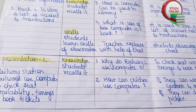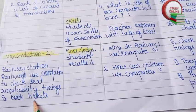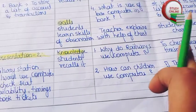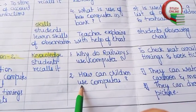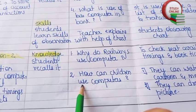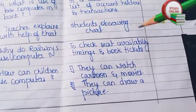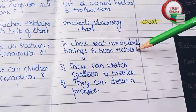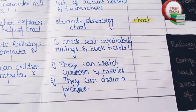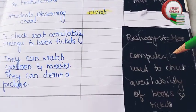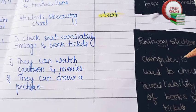In Presentation 2 we explain the use of a computer in a railway station. The questions here are: How do railways use computers? How can children use computers? You can see the expected answers from students and the corresponding blackboard work.